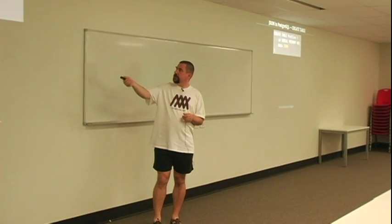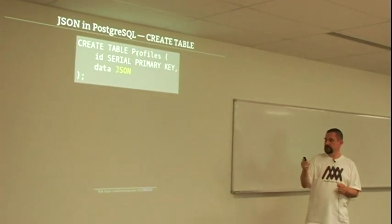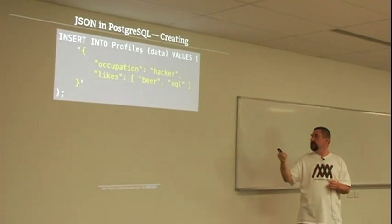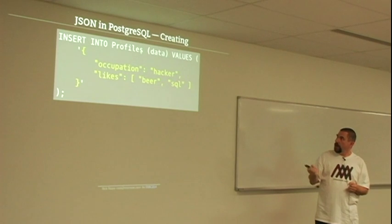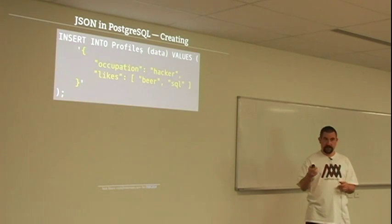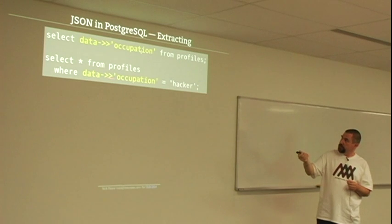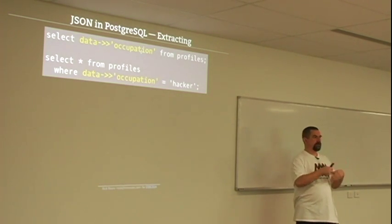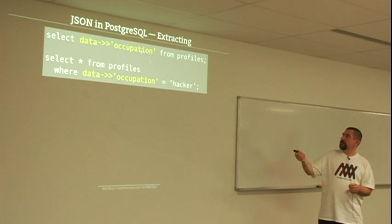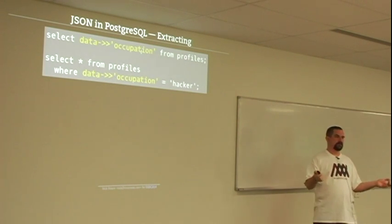You use it just like any other data type. You declare a column called 'data' with type JSON. You can insert things into it with just string literals — it does an implicit cast to the JSON data type — or you can provide an explicit cast. You can use these operators — little arrows and similar — to take parts of that JSON document and use them just like a text value. So you can select a piece of the JSON document, or use it in a WHERE clause, and so on.